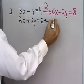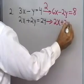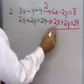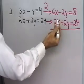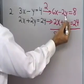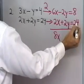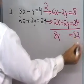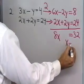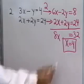Leave the second equation the same: 2x plus 2y is equal to 24. Now, when I add the left sides together, 6x plus 2x is 8x. Negative 2y plus 2y is 0, and 8 plus 24 is 32. Divide both sides by 8, and x is equal to 4. That's the x-coordinate of the point where those two graphs intersect.